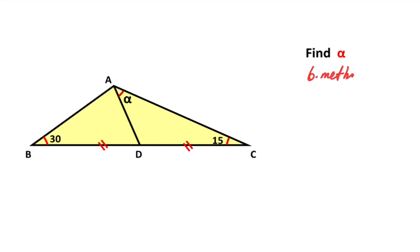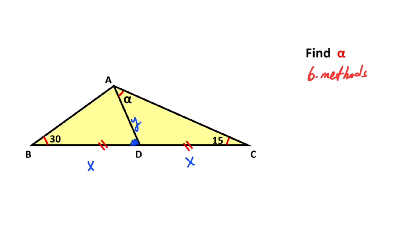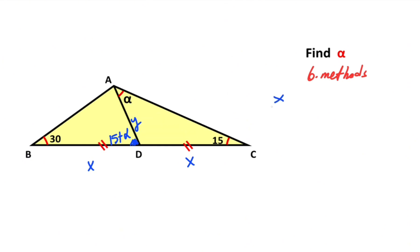Now let's calculate the value of alpha using the sixth method. Let's call the equal sides x and here let's call y. We know that the sum of opposite exterior angles of a triangle: here must be equal to 15 plus alpha. For this triangle, if we apply the sine rule: x over sin(alpha) equals y over sin(15°).